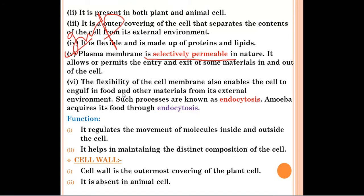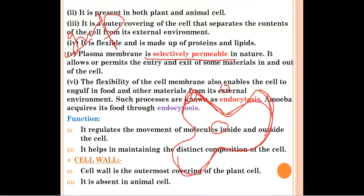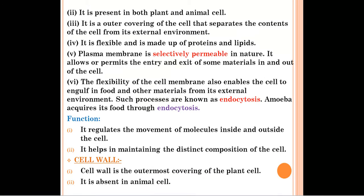The flexibility of the cell membrane also enables the cell to engulf food and other materials from its external environment. For example, in amoeba, food is present outside. Amoeba extends its pseudopodia — pseudopodia means false feet — and through the plasma membrane, food enters its body. This process is known as endocytosis. Amoeba acquires its food through endocytosis, with the help of its pseudopodia.